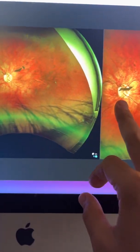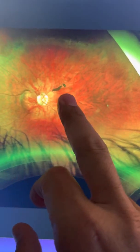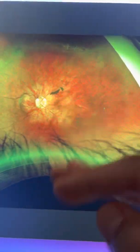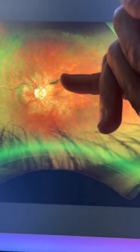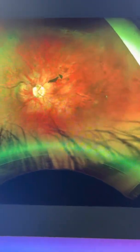And as the vitreous dances around with the eye movements, this can certainly come into this visual axis right in front of the macula and become more symptomatic.